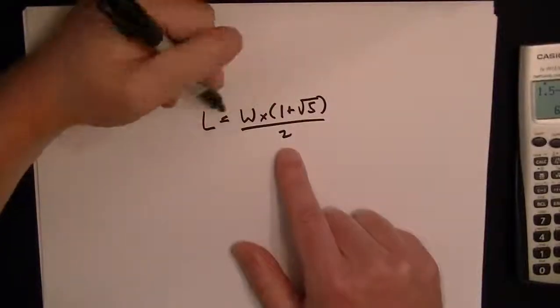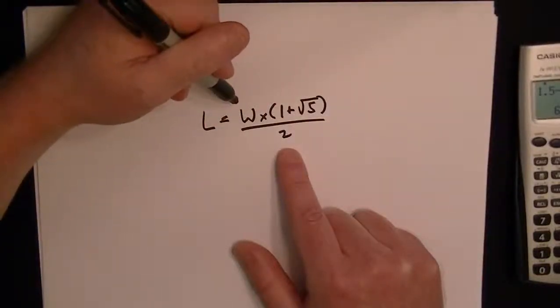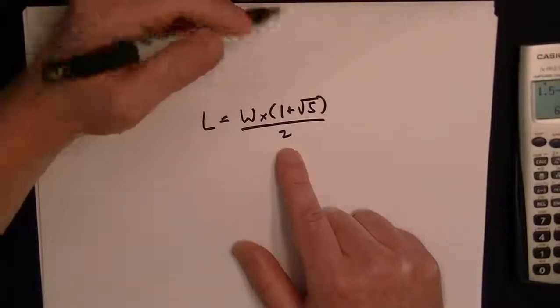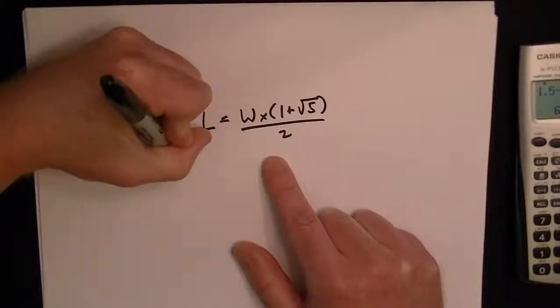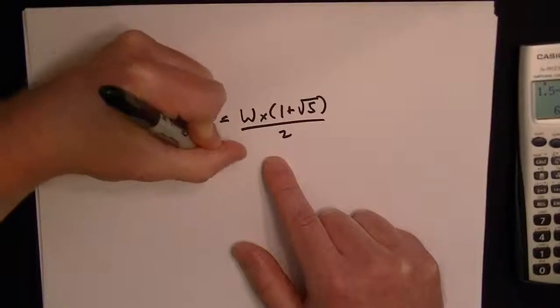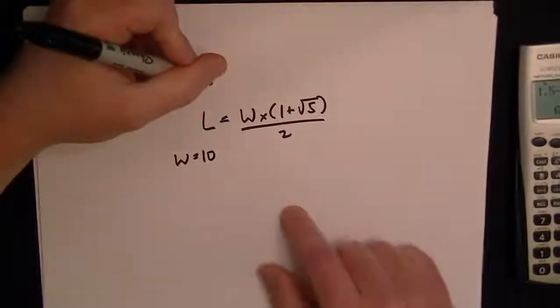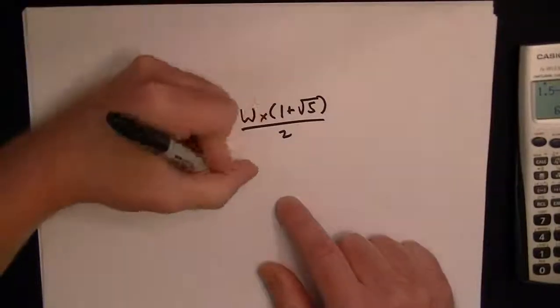So they basically just want to test to see if you can fill in the formula and do the correct order of operations. So we're told that the width given for this rectangle is 10 meters, so we want to know what the length is. So we just have to fill this in.